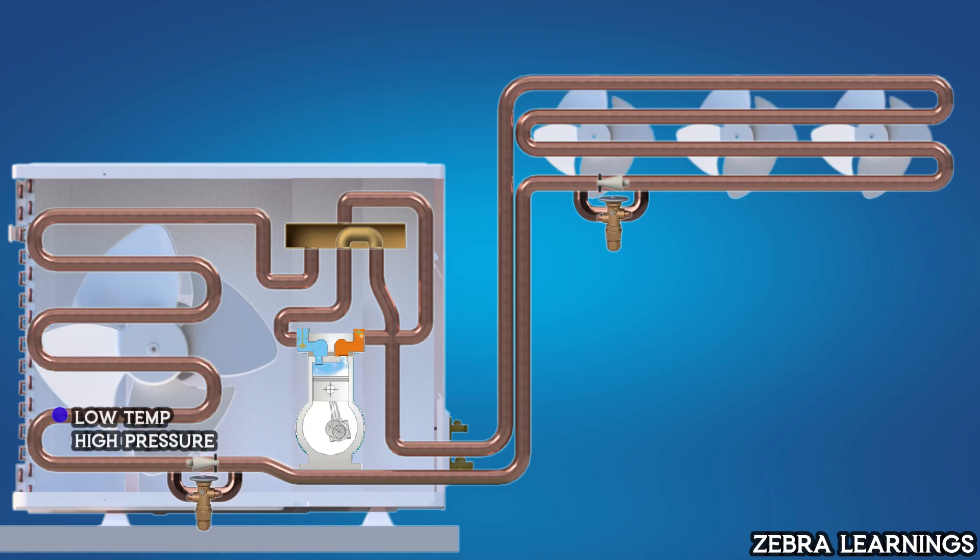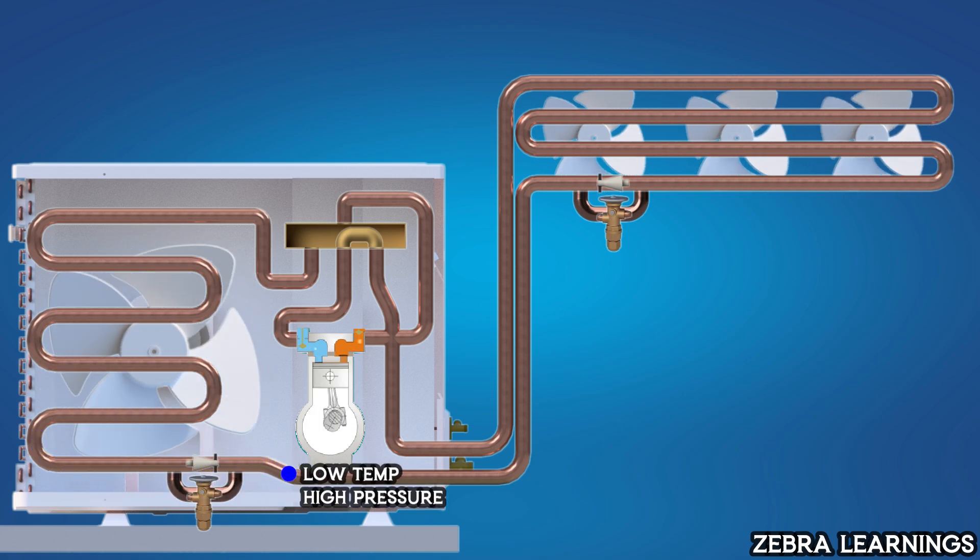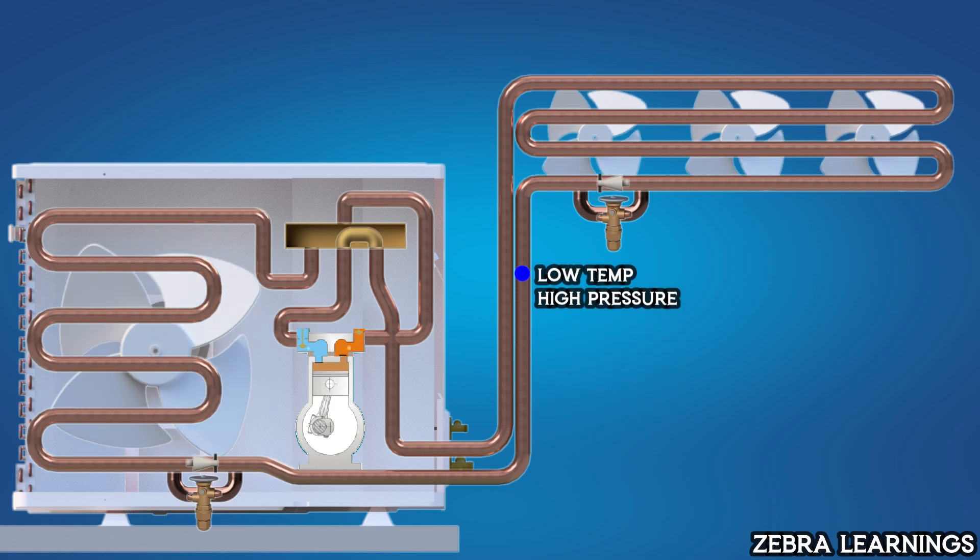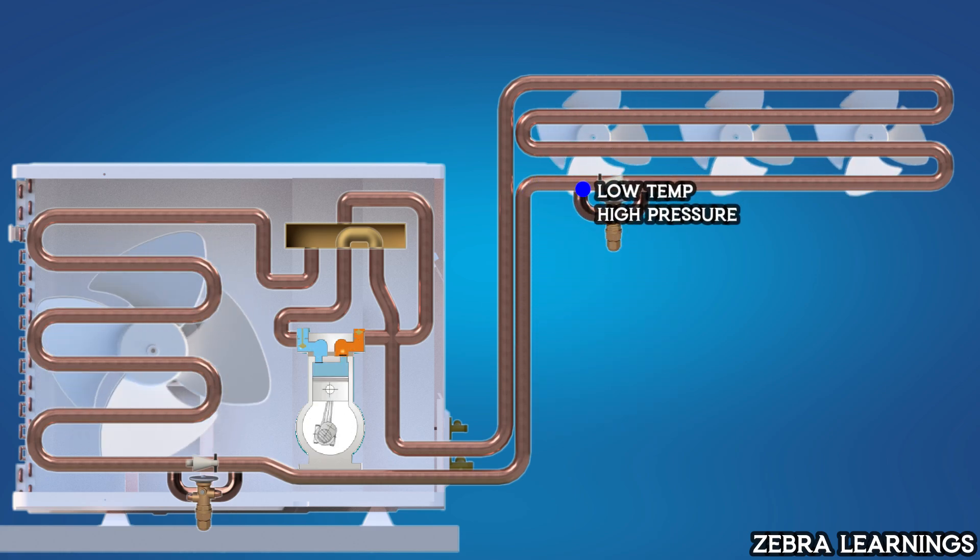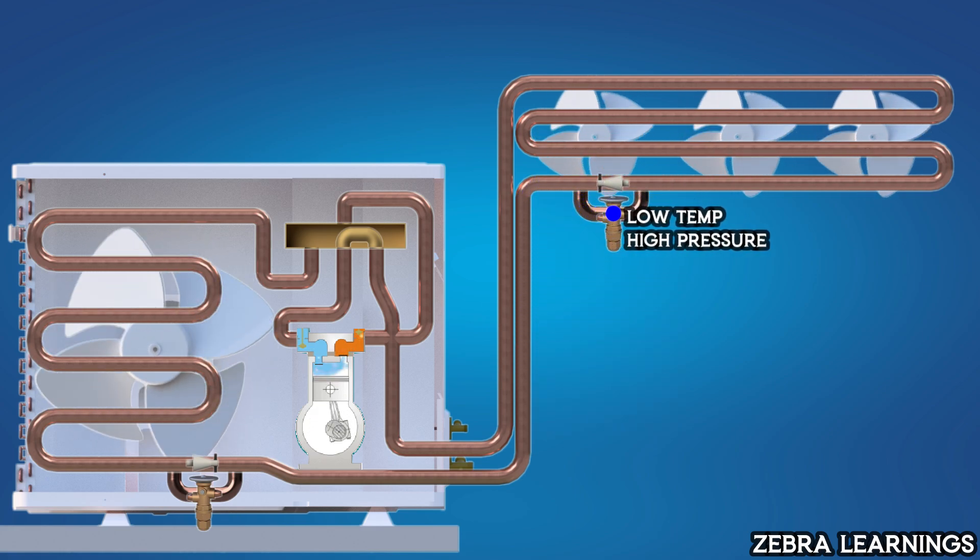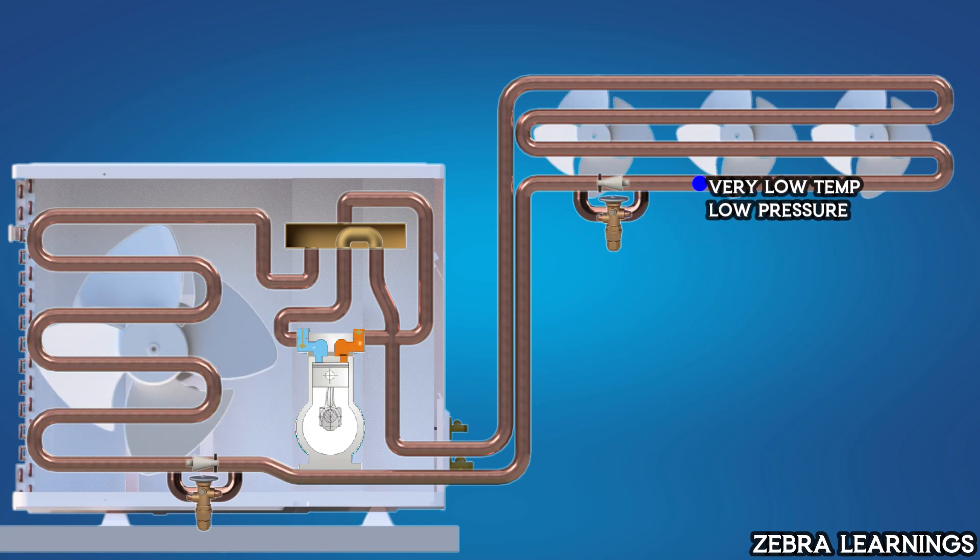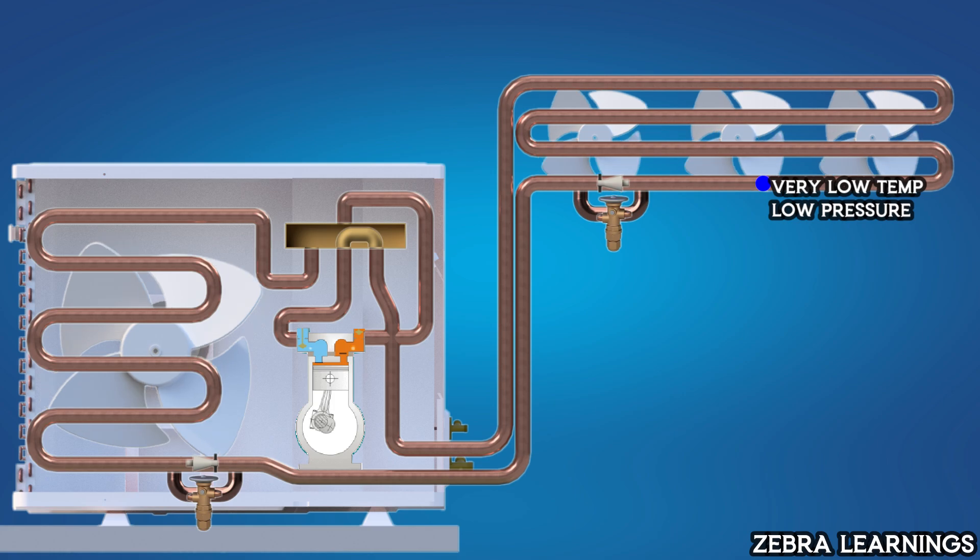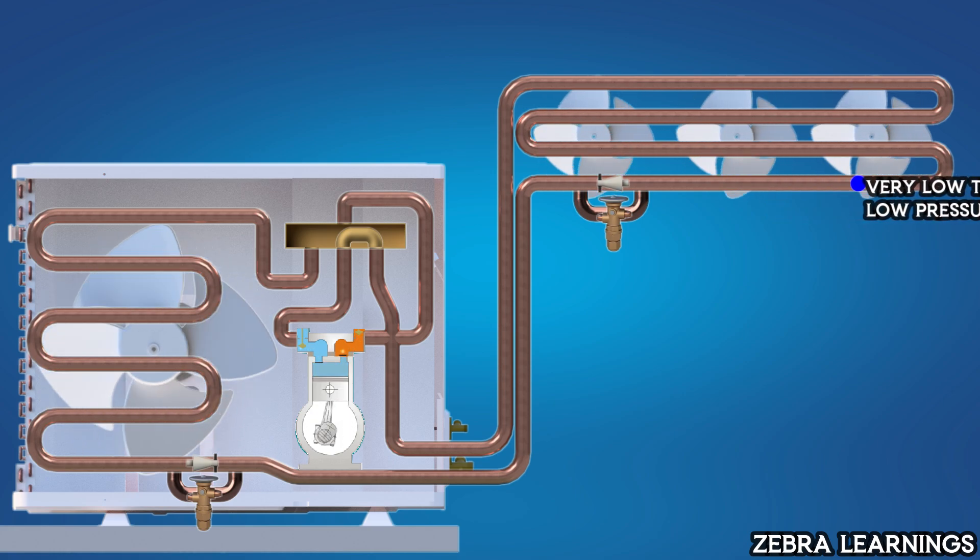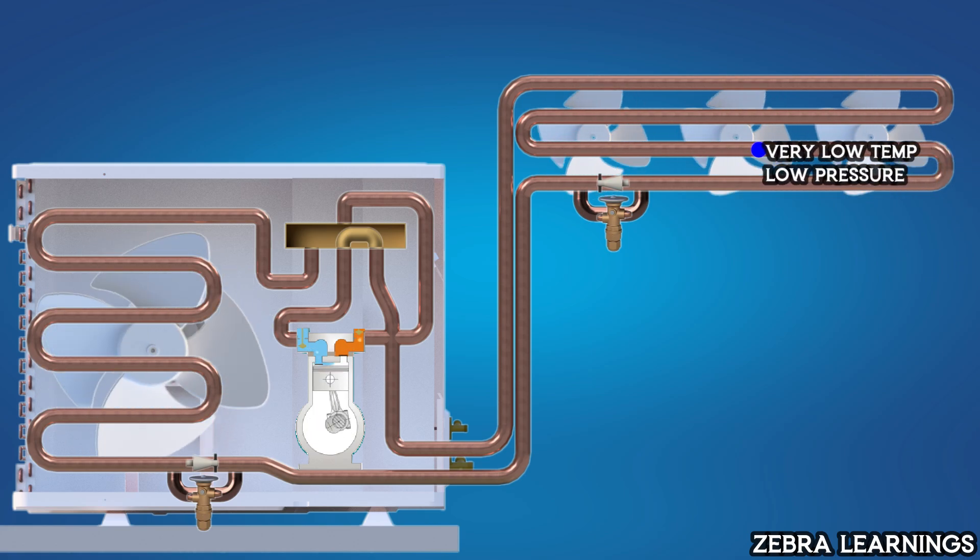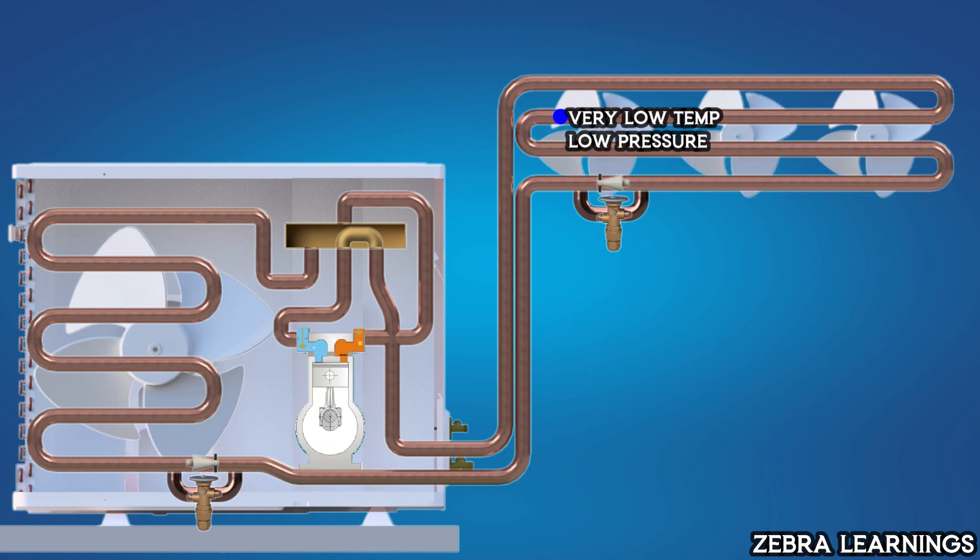In the outdoor unit, the refrigerant cools down and travels through the non-return valve to the indoor unit. Then it passes through the expansion valve. When the refrigerant passes through the expansion valve, its temperature drops significantly, providing a cooling effect as it reaches the indoor coil. The indoor fan motor then blows this cool air into the room.